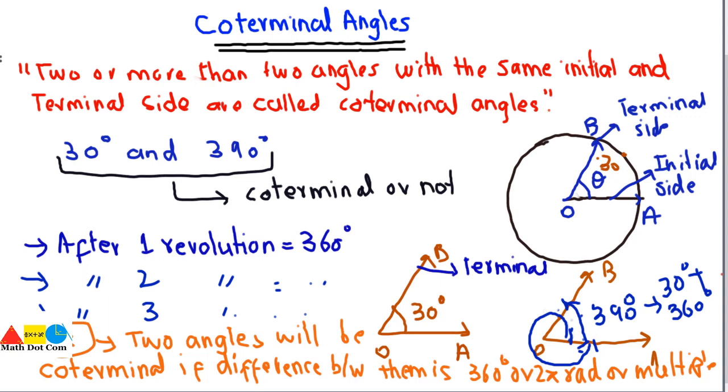So this is the concept of coterminal angles. For radians and for degrees, in case of radians, there should be 2π revolution, and in case of degrees, it should be 360 degrees. It means if the given angle, after completing one revolution, comes to the terminal position of the first angle, it means they are coterminal.